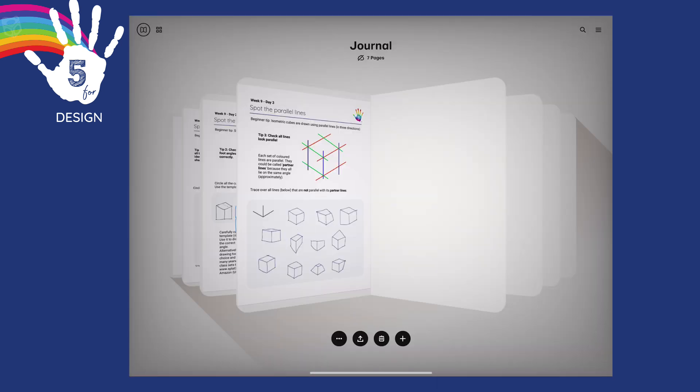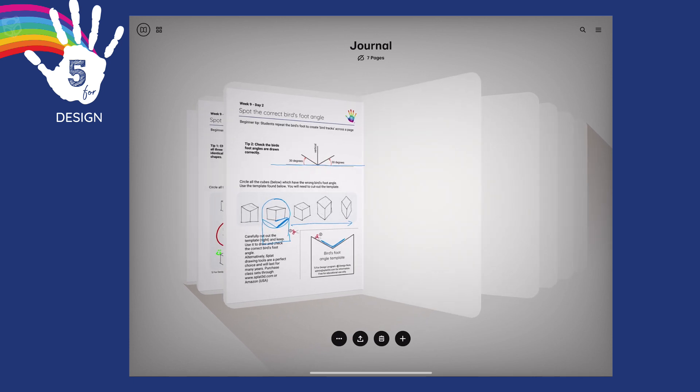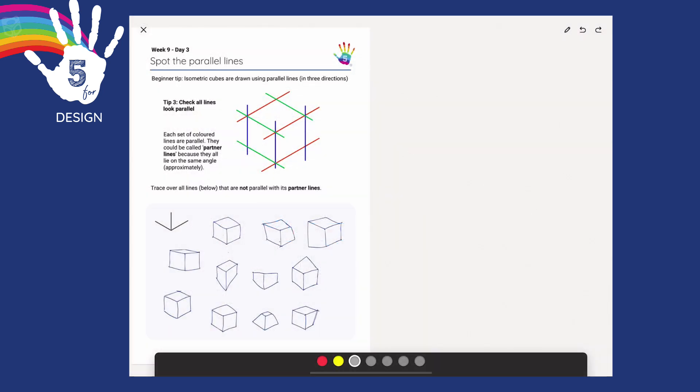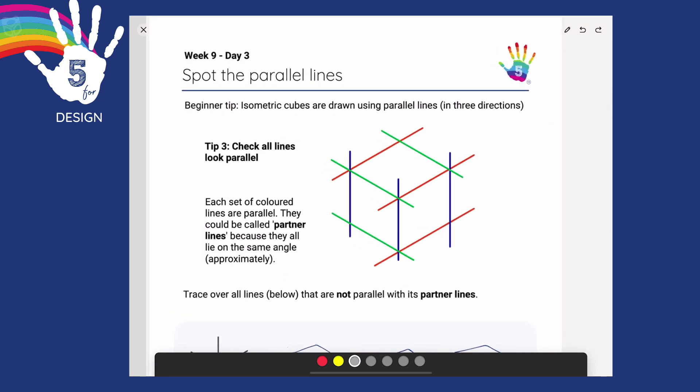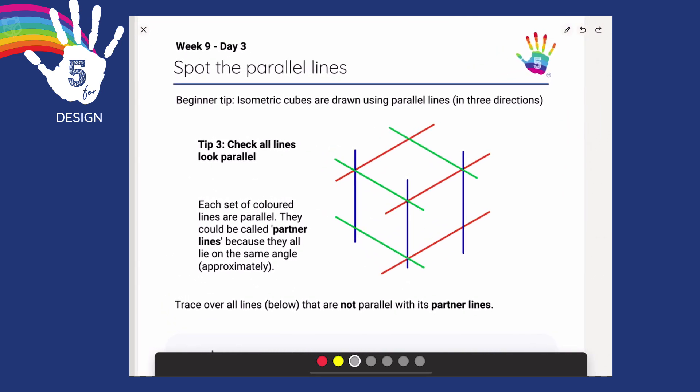Hi, let's jump straight into day three, where we're looking for ways to improve your drawing of cubes. But first, a look back at last lesson, tip two. Make sure that your bird's foot is around about the right angle. Here's my next top tip, number three. Each set of colored lines should be parallel.